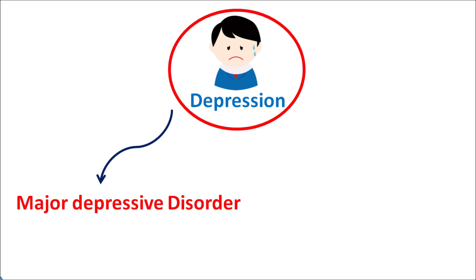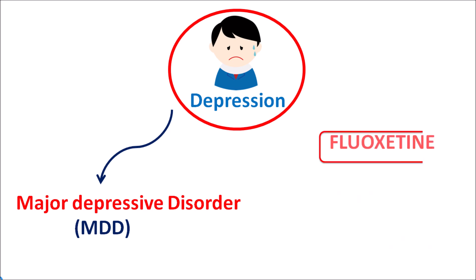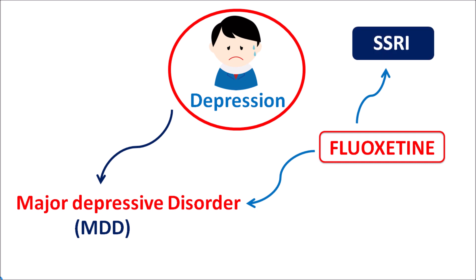When these symptoms persist in patients for longer periods it is classified as major depressive disorder (MDD). To treat MDD, many types of antidepressants are available, and among them fluoxetine is one of the drugs which can be used to control this condition. This drug belongs to the category of SSRIs — selective serotonin reuptake inhibitors.